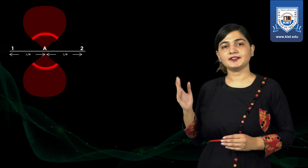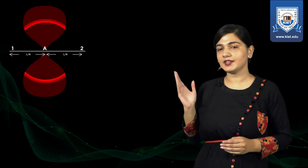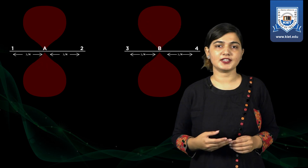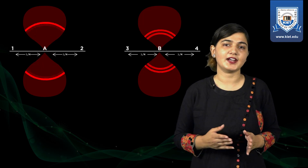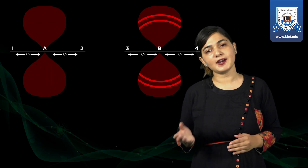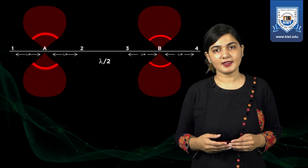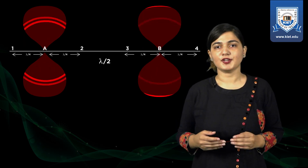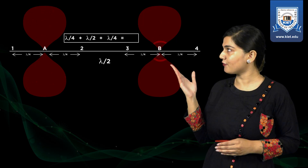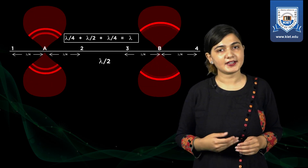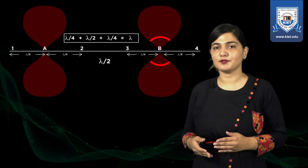The center lies at lambda/4 distance from antenna 1 and lambda/4 from antenna 2, and we term this imaginary antenna as antenna A. Antenna A has a radiation pattern that looks like a figure-8. Similarly, the output radiation of antennas 3 and 4 lies at the center of antennas 3 and 4 — lambda/4 from antenna 3 and lambda/4 from antenna 4, termed antenna B. The total distance between antenna A and B is lambda/4 + lambda/2 + lambda/4, which equals lambda.